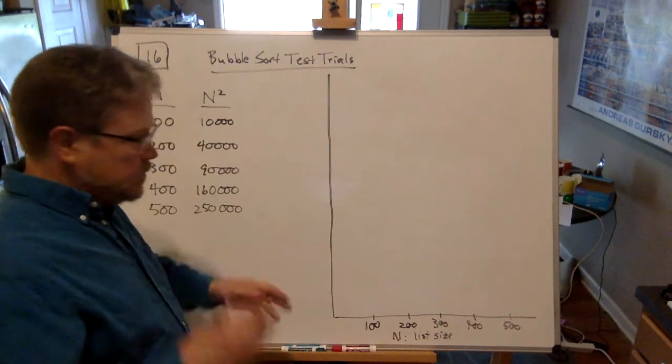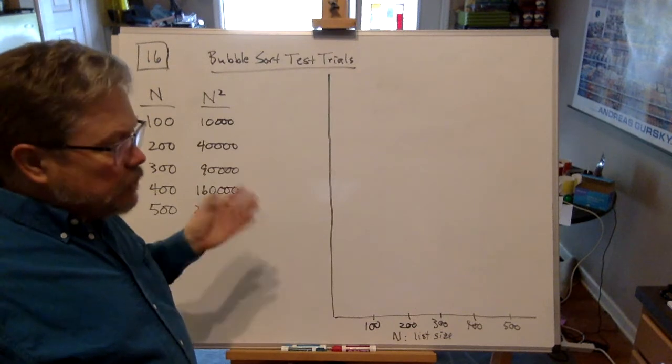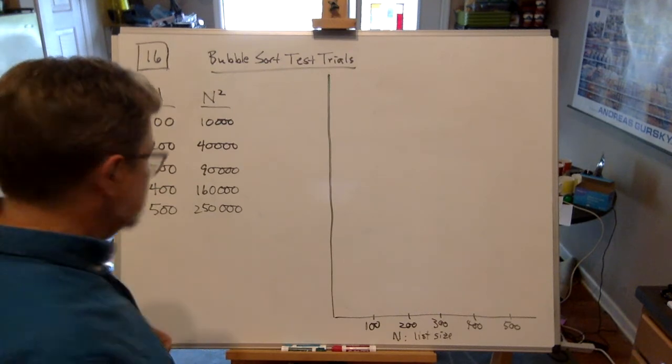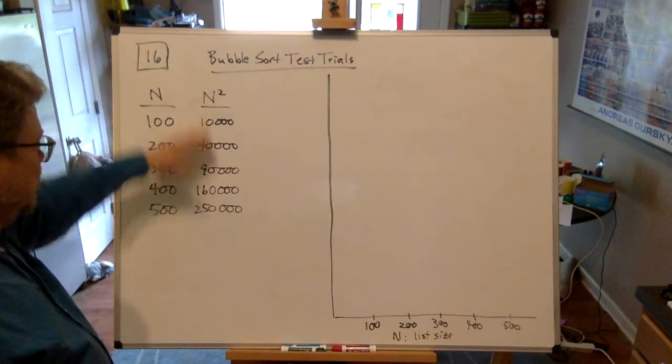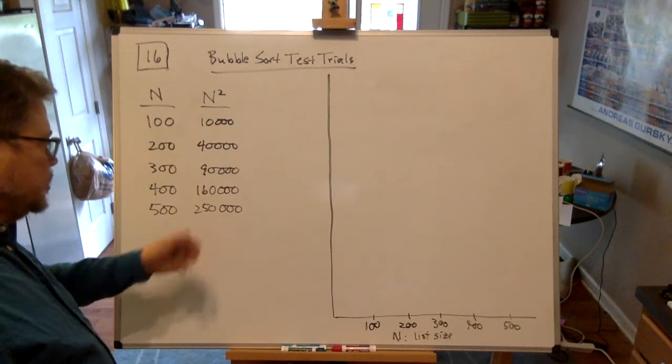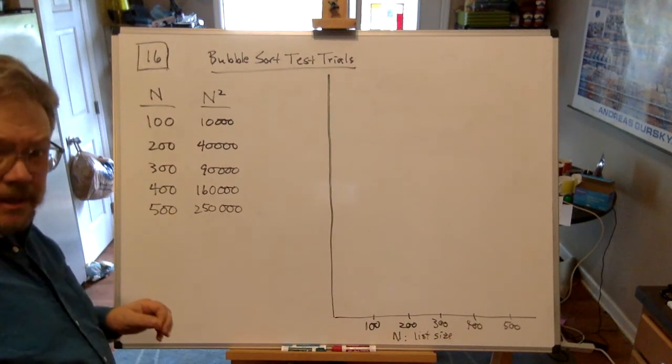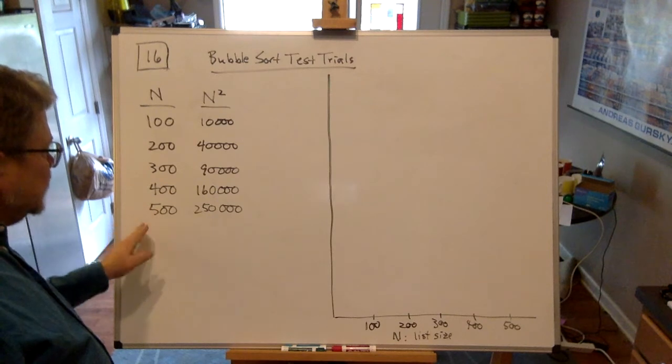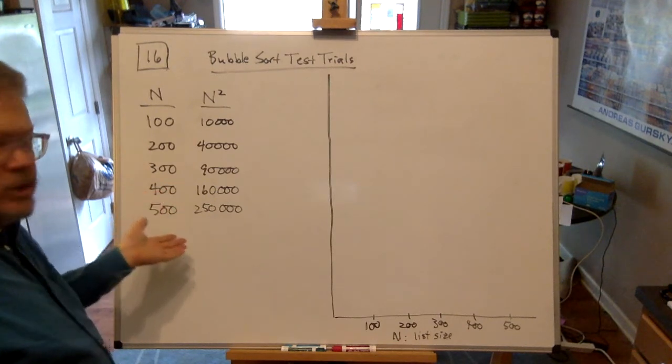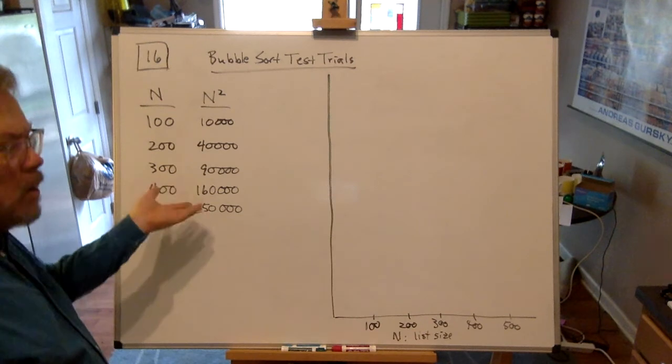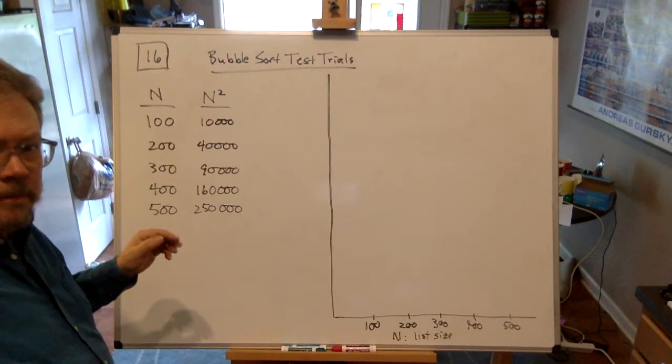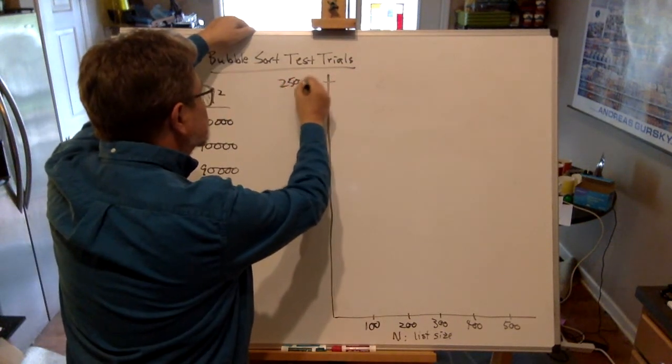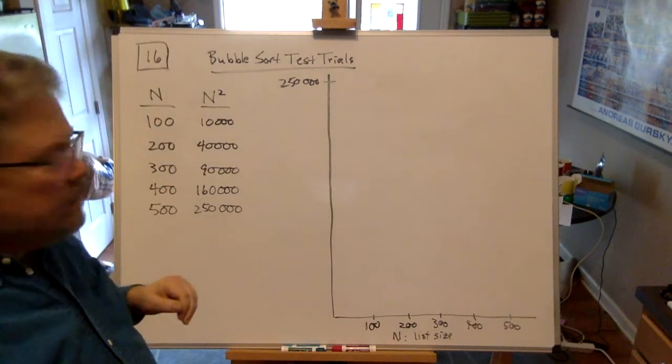On the y-axis, I'm just going to count how many comparisons are required on a list of that size to get it in order using bubble sort. It looks like I'm going to need to go all the way up. For the worst case, it could be something close to 250,000 comparisons in the worst case, which is that 500 over there. I can expect it's going to be less than 250,000 comparisons. Good grief, that's still a lot.